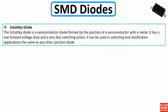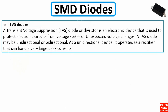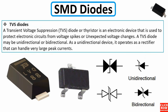The Schottky diode is a semiconductor diode formed by the junction of a semiconductor with a metal. It has a low forward voltage drop and a very fast switching action, and can be used in switching and rectification applications like any other junction diode. As you can see, a Schottky diode can come with two, three, or even four terminals, and has a special symbol with anode and cathode.